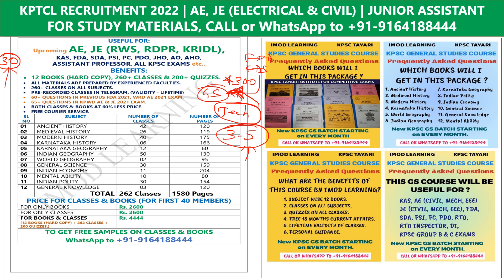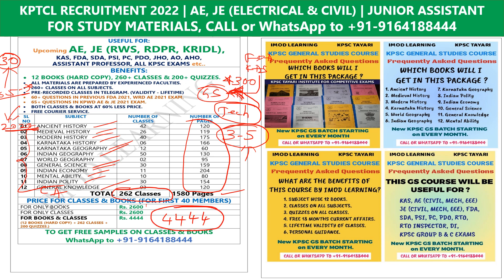Coming to our course offerings: the General Studies Complete Course is available online. The syllabus includes ancient history, medieval history, modern history, Karnataka history, Karnataka geography, Indian geography, general science, Indian economy, mental ability, Indian polity, general knowledge, and current affairs. The course includes 1580 pages of study material, 262 online classes, 12 books, and lifetime validity — all for 4444 rupees. All classes are available in the Telegram group.